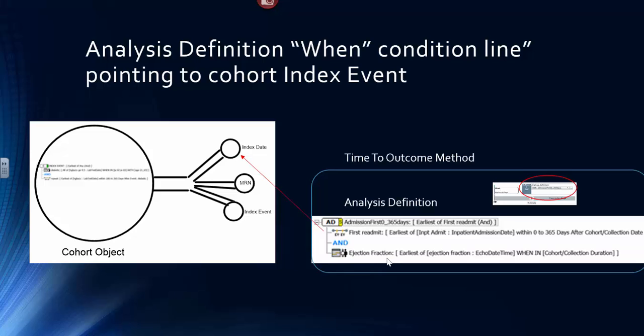And the second line, the ejection fraction, is a when in pointing to the index event of the cohort member.